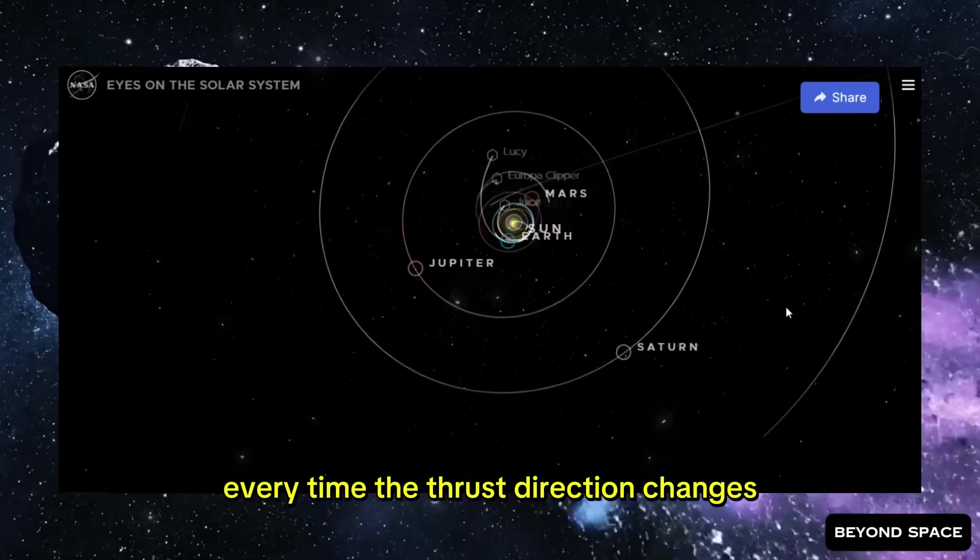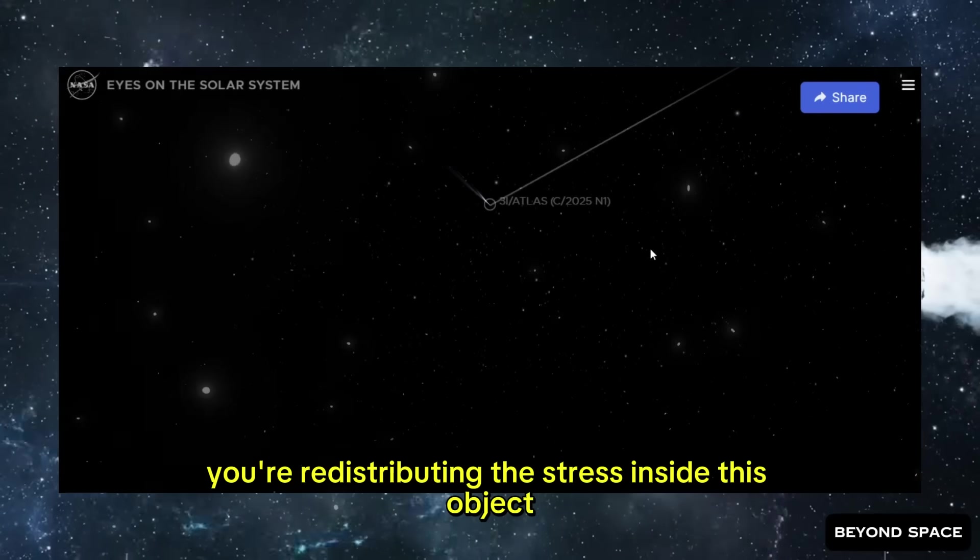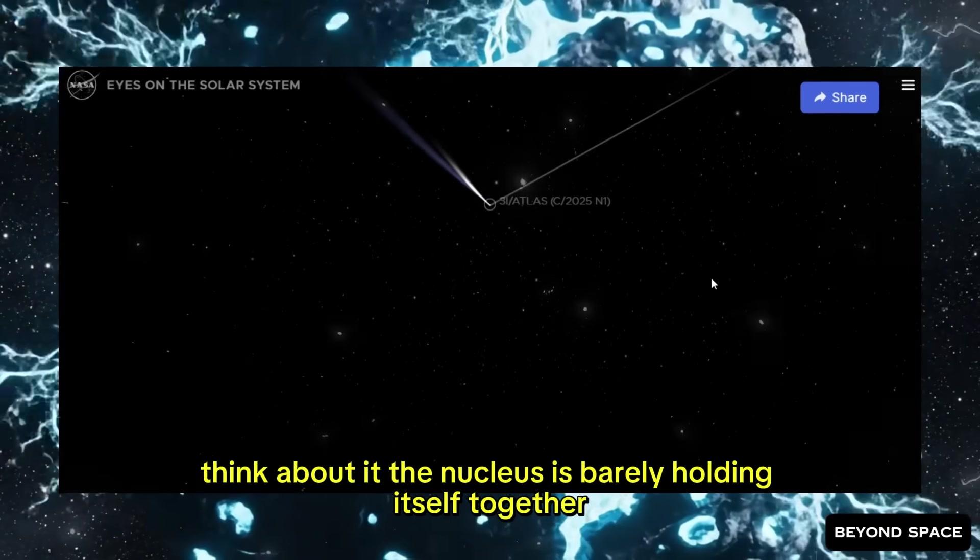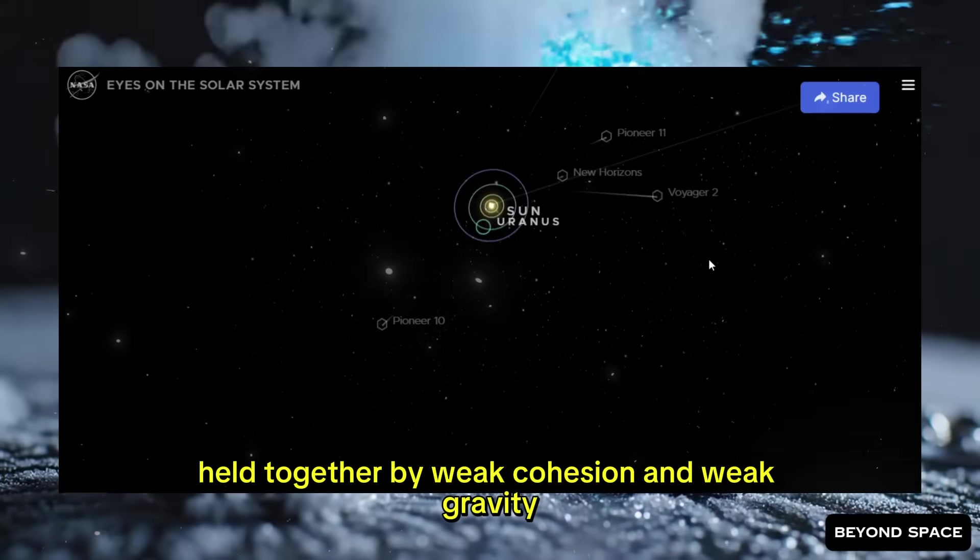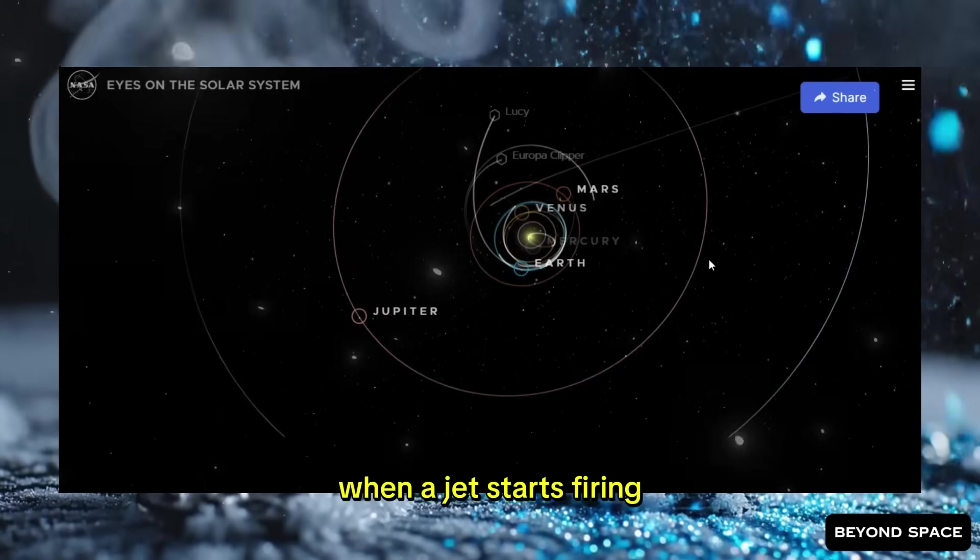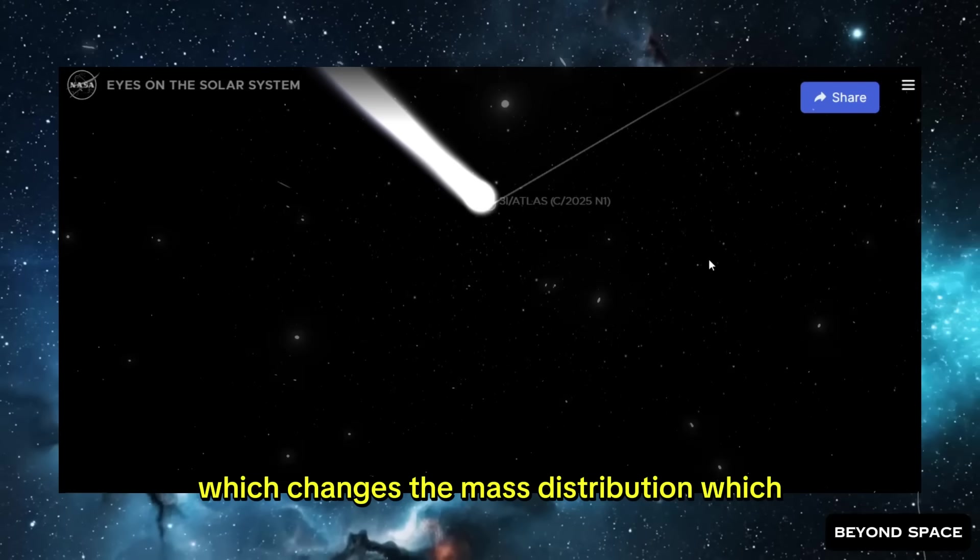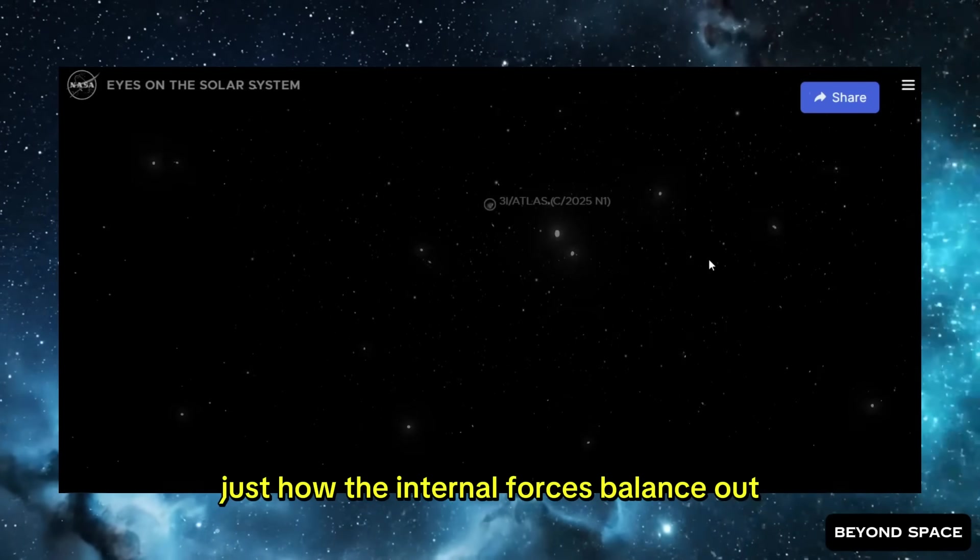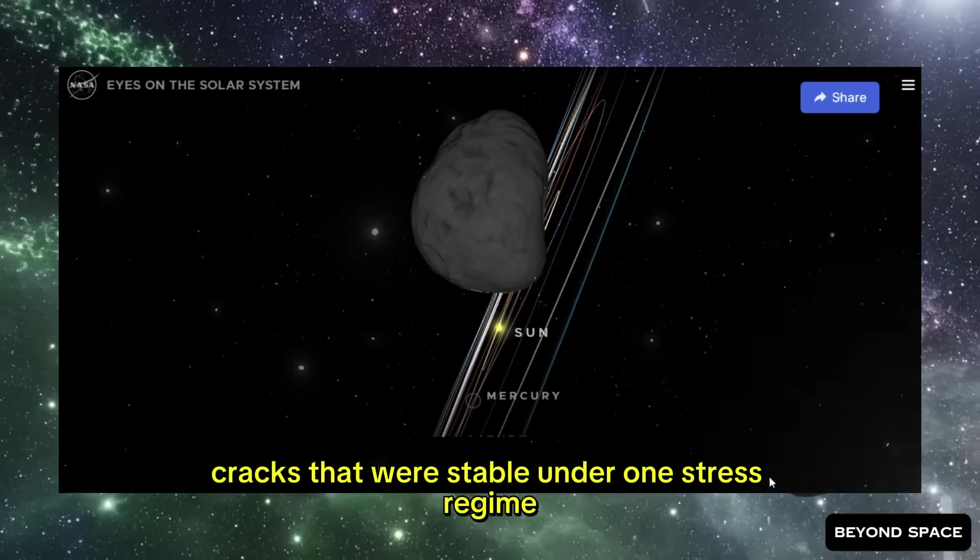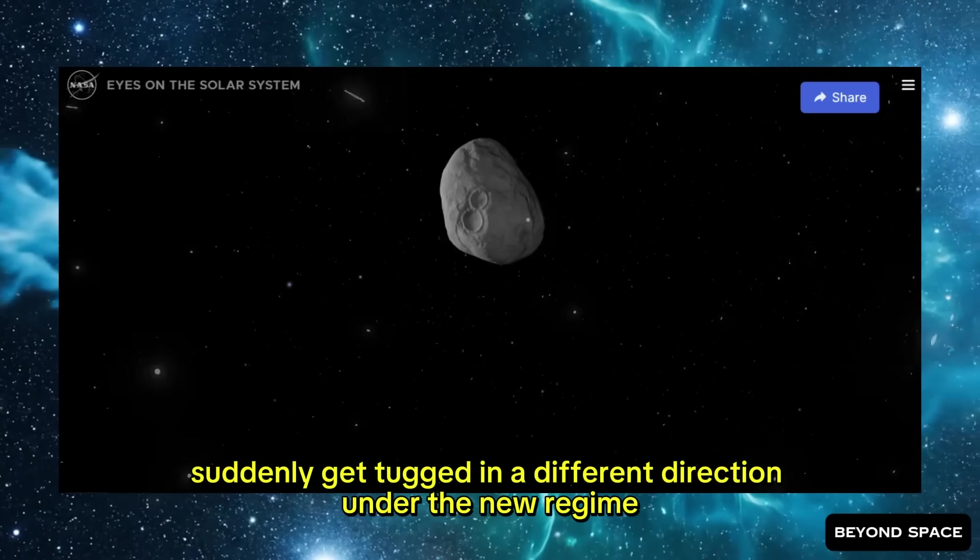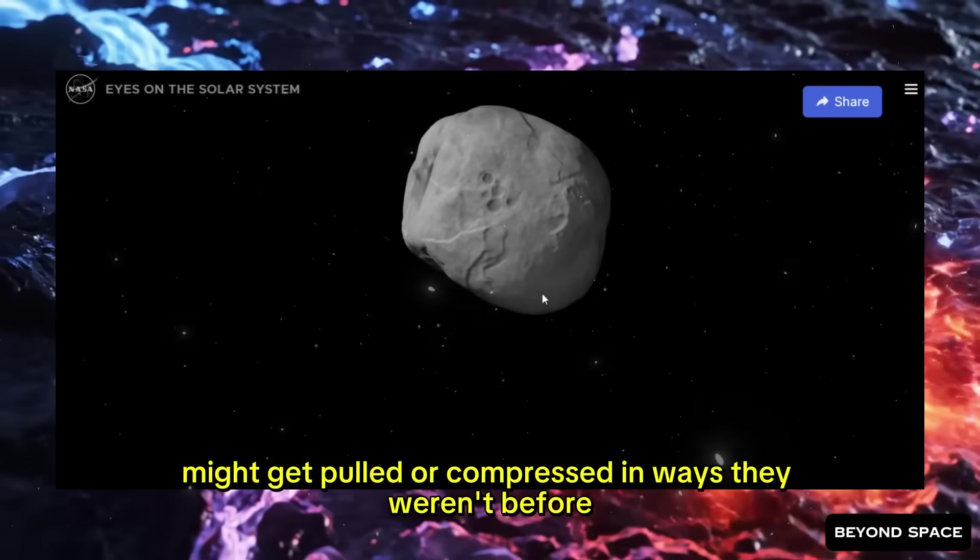But here's where it gets worrying. Every time the thrust direction changes, every time a new jet comes online or the spin axis tilts, you're redistributing the stress inside this object. Think about it. The nucleus is barely holding itself together. It's not solid. It's not strong. It's a loose pile of ice and rock held together by weak cohesion and weak gravity. When a jet starts firing, it's pulling material off the surface in that area, which changes the mass distribution, which changes how the internal forces balance out. Parts of the surface that were in shadow suddenly get blasted by sunlight, reflected off other parts of the comet. Cracks that were stable under one stress regime suddenly get tugged in a different direction under the new regime.